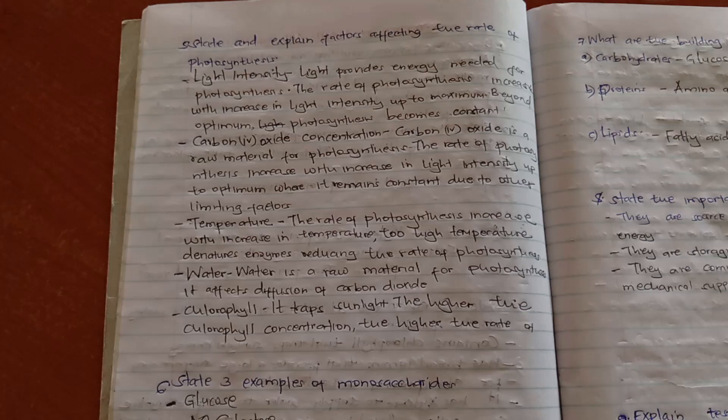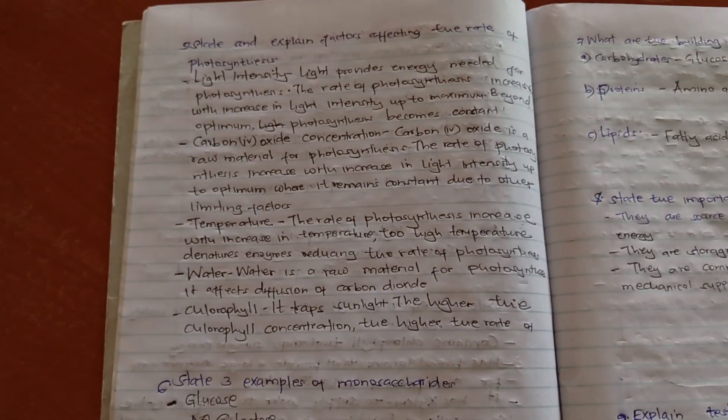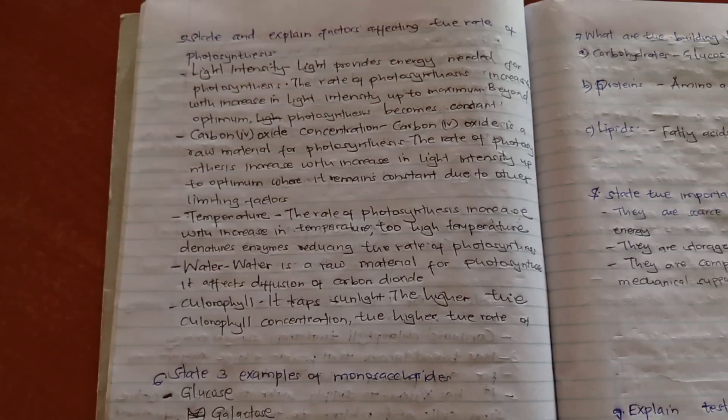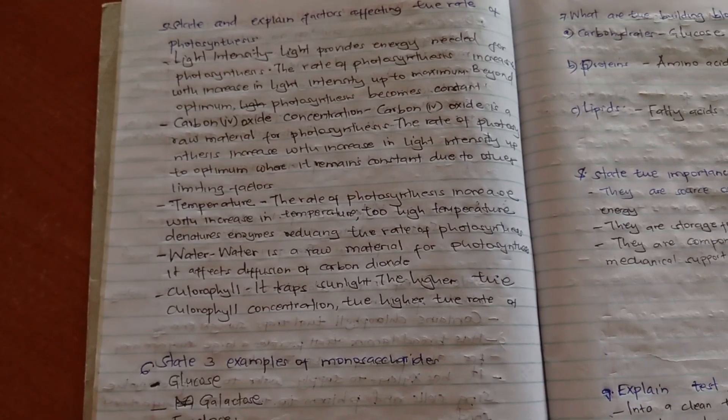Water, water is also a raw material for photosynthesis, and therefore the higher the amount of water, the higher the rate of photosynthesis. Chlorophyll is also required for photosynthesis, and the higher the amount of chlorophyll, the higher the rate of photosynthesis.